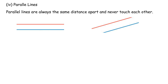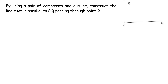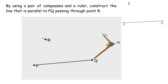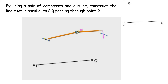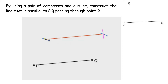4. Parallel lines. Parallel lines are always the same distance apart and never touch each other. The red line is parallel to the blue line. Using a pair of compasses and a ruler, construct the line parallel to PQ passing through point R. 1. With the distance on the compasses equal to the length of PR, construct an arc at P passing through R. 2. Keeping the same distance, construct an arc from Q. 3. With the distance equal to PQ, construct an arc from R intersecting the arc constructed. 4. Draw a line joining the point of intersection.